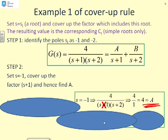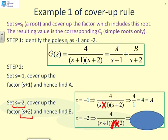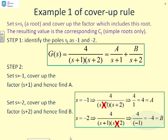Now for the second factor: I set S equal to minus 2 for the S+2 term. Taking the original expression and covering up (S+2) leaves 4 over (S+1). Substituting S equals minus 2 gives 4 over minus 1, which equals minus 4, giving me B equals minus 4.